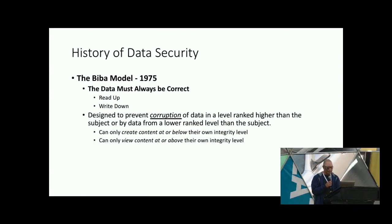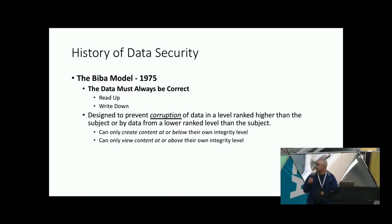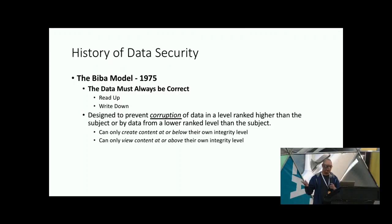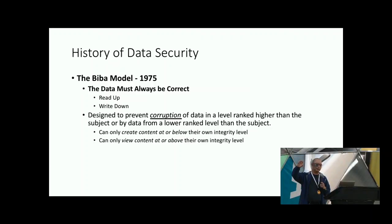There are two types of models that existed. The BIBA model was developed in 1975 specifically to prevent corruption of data. Corruption of data is essentially about integrity, and it operates in a read-up and write-down manner. You can only create content at or below the integrity level. Think of it as a hierarchy of monks where only the top priest can write the scriptures and the interns can only read — not write. You're protecting the integrity of data by making sure only the highest authority writes it.